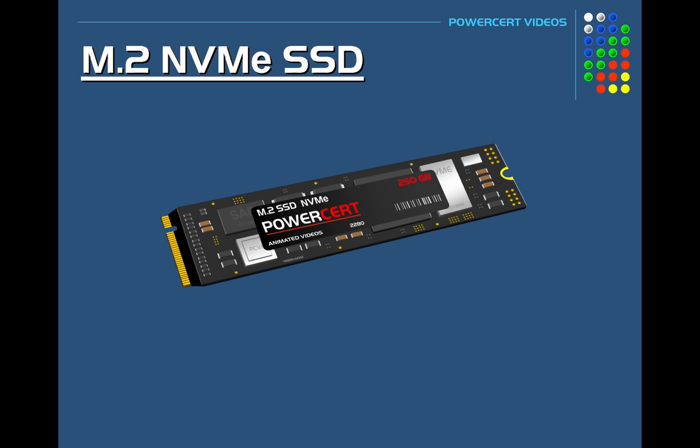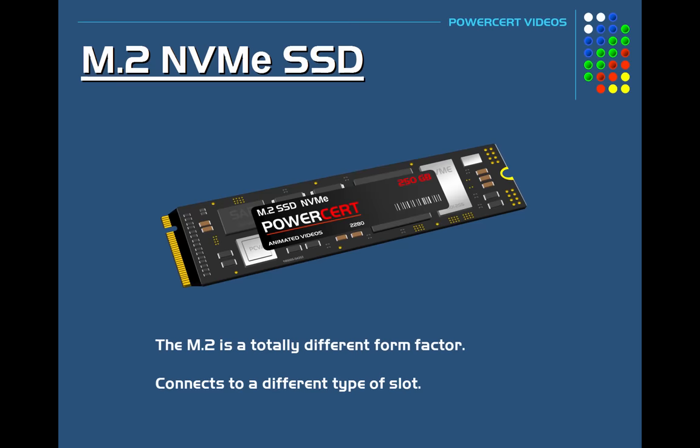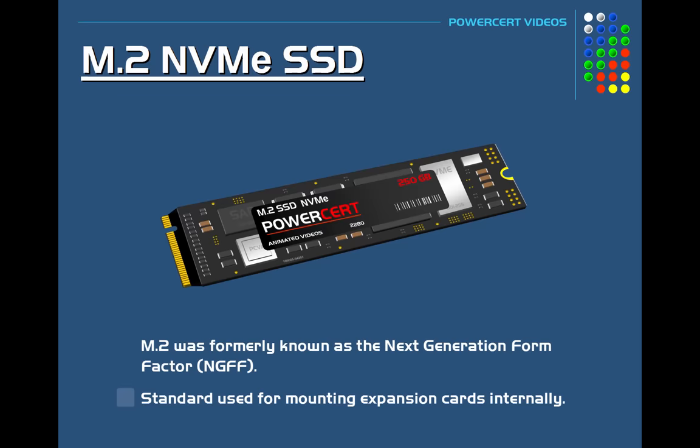The difference between a regular 2.5 inch SSD and an M.2 SSD is that the M.2 is a totally different form factor and it connects to a different type of slot. The M.2, which was formerly known as the Next Generation Form Factor, is a standard used for mounting expansion cards internally.